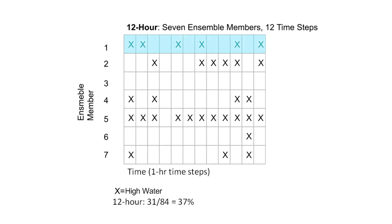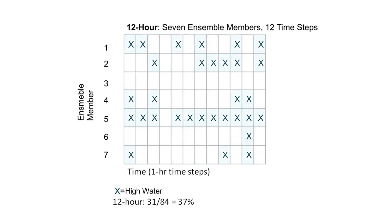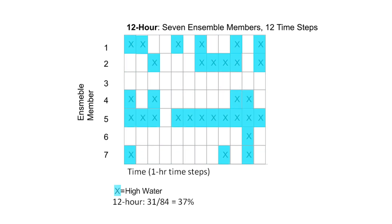There are 12 hourly time steps for each of the seven ensemble members, and that results in a total of 84 forecast time steps. In this case, 31 of the 84 time step forecasts, or 37%, are indicating high water conditions, so the probability of high water is 37%.